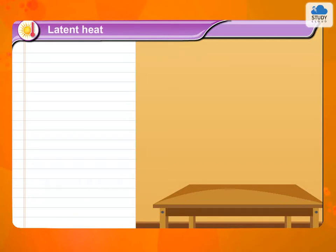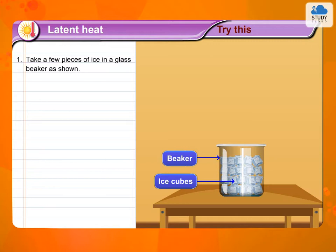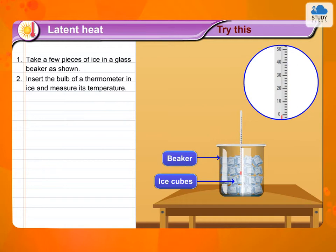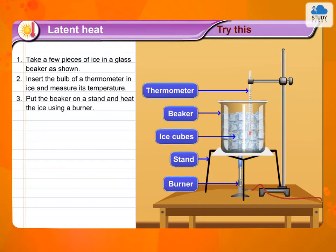Latent Heat. Try this. Take a few pieces of ice in a glass beaker as shown. Insert the bulb of a thermometer in ice and measure its temperature. Put the beaker on a stand and heat the ice using a burner.